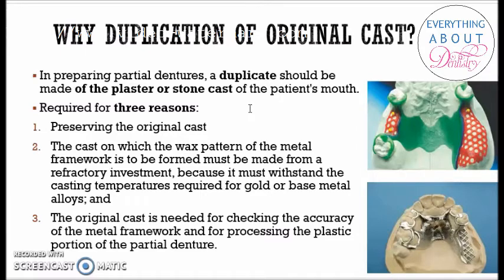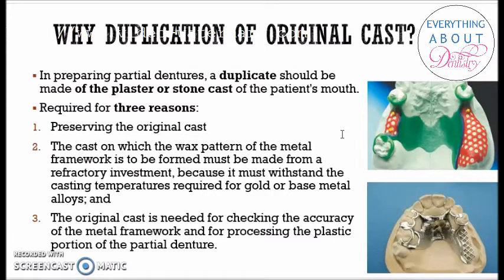The second reason is that the cast on which the wax pattern of the metal framework is to be formed must be made from a refractory investment. When fabricating a cast partial denture, the metallic components are made by casting. The wax pattern and the cast assembly undergo very high temperatures, so the plaster and dental stone commonly used in the dental lab cannot withstand those high temperatures. You need a cast made with a refractory investment material that can withstand high temperatures. So you duplicate the original cast and the duplicated cast is made with refractory investment, on which you form the wax pattern and then proceed with casting.